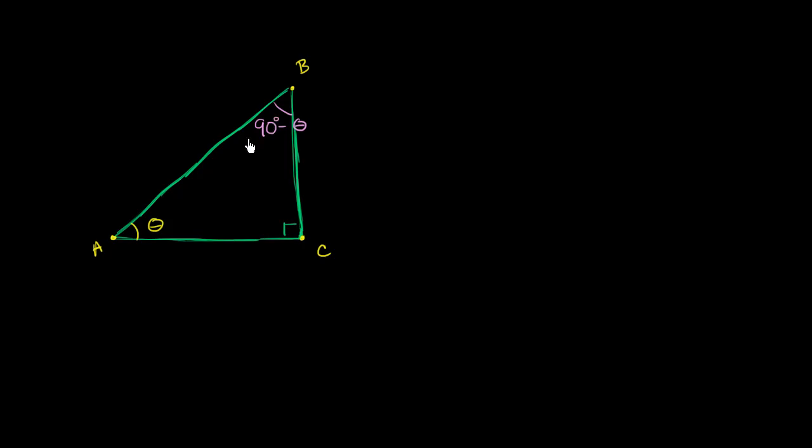Another way of thinking about it is B can be written as 90 minus theta. If you add theta to 90 degrees minus theta, you're going to get 90 degrees.